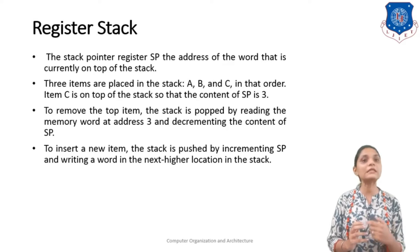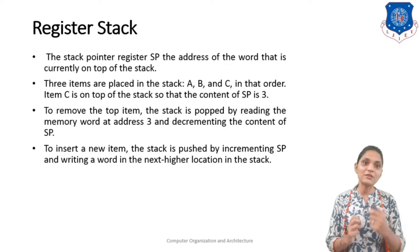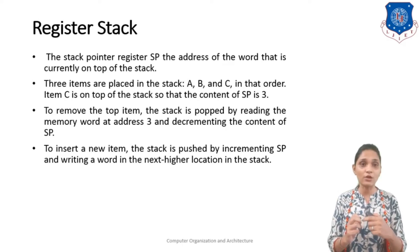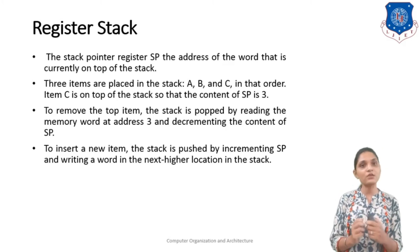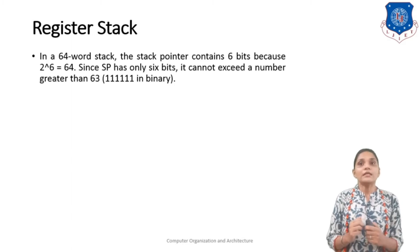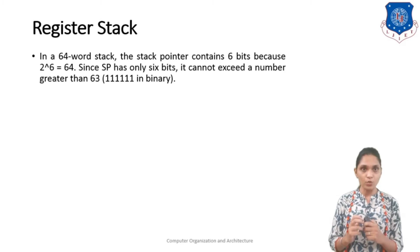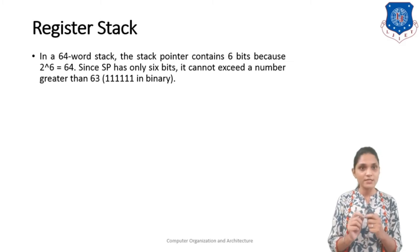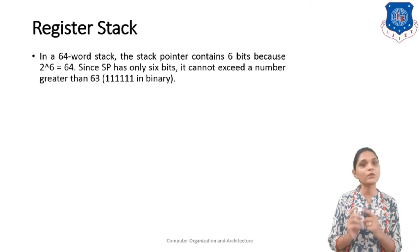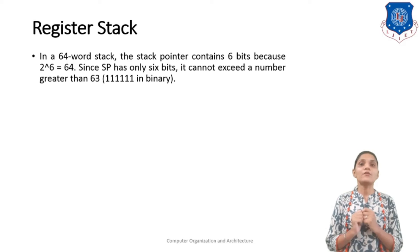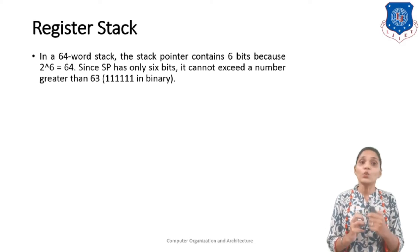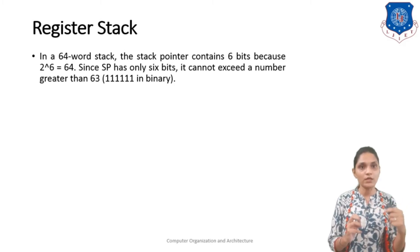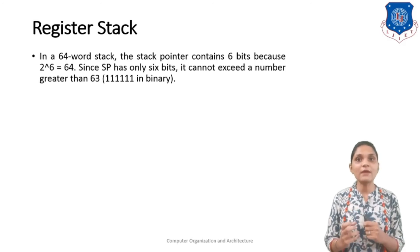If you want to push data into this stack, the stack pointer will be incremented by 1 — it is already 3, so next it will be 4 and the content is going to be stored there. Our stack is a 64-word stack and the stack pointer should contain 6 bits, because we have 64 locations to address and 2 raised to 6 equals 64. So we require 6 bits to represent the whole address of 64 registers. The stack pointer's content will range from 000000 to 111111.